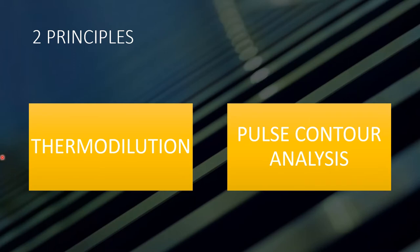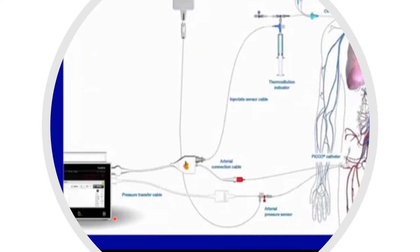PICO is based on two principles: the first is thermodilution, and the other is pulse contour analysis. Before explaining thermodilution, we will see the setup of PICO.